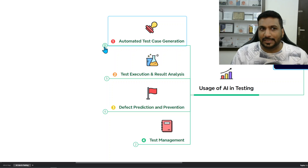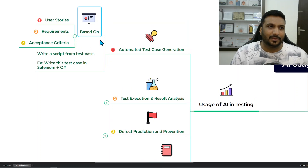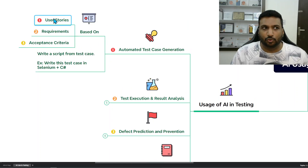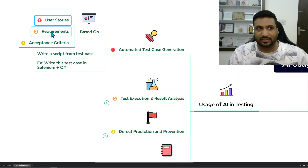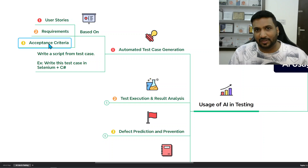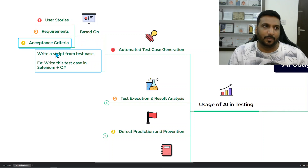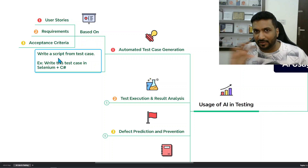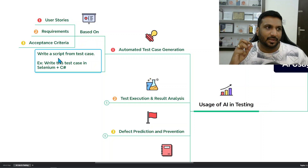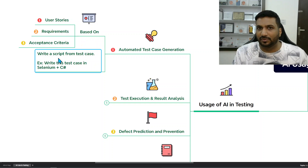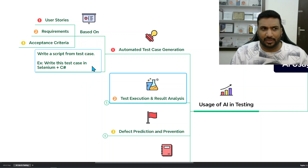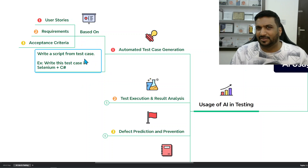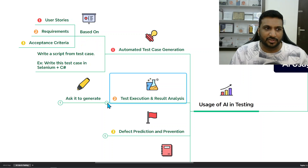The first use case is automated test case generation. You can use AI to write test cases based on user stories — paste a user story and ask it to write test cases, or take a requirement or acceptance criteria and get three to four good ideas to cover that requirement. For automation, you can pass in a test case written in plain English and ask it to write the scenario in, for example, Selenium C#, potentially getting boilerplate code — a potential time saver.